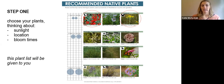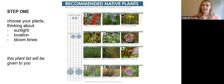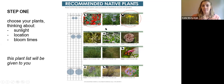Step one: choose your plants. Think about all those things that you looked at at your site — the sunlight, the location, and the bloom times. You will be given a recommended native plant sheet, and you can look through all of these different plant options and circle the ones that you want to include. Make sure that if your site is full shade, you're only choosing plants that do well in the shade — it will say that right below the picture. If you choose a couple plants that bloom in the spring, then maybe choose one that blooms in the summer and one that blooms in the fall, so that you have something always blooming in your garden.